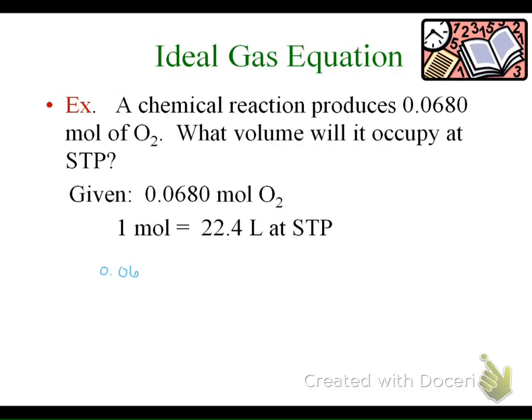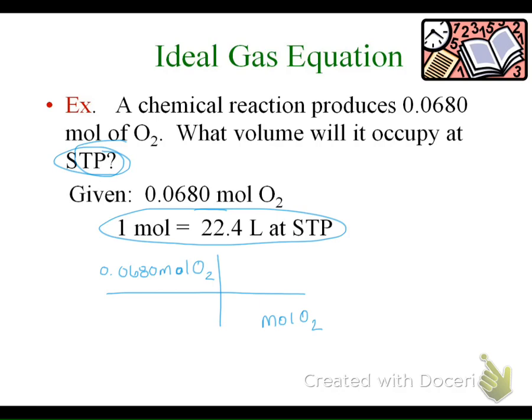You've got 0.0680 moles of oxygen. In stoichiometry, the next unit that goes on the bottom is moles of oxygen. Because we're at STP, one of the biggest things we need to be aware of is that we can only do gas stoichiometry and use this conversion unit when we know we're at STP. We can go from moles to liters of oxygen because one mole is 22.4 liters.